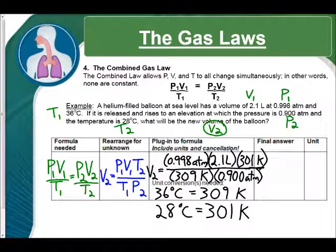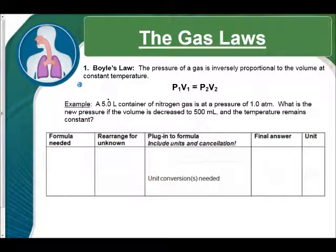Now, we have everything we need to plug into our formula. V2 equals 0.998 atmospheres times 2.1 liters times 301 Kelvin, and that's divided by 309 Kelvin and 0.900 atmospheres. So, when we do the math, we're going to have an answer of 2.27 liters. Now, we got just the liters because atmospheres cancel, Kelvin cancels. So, the only thing left was liters. So, again, multiply across the top, divide by what's on the bottom.